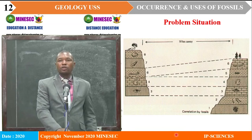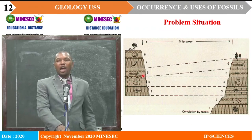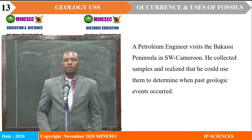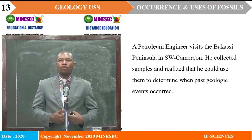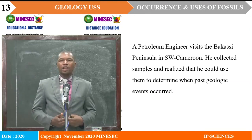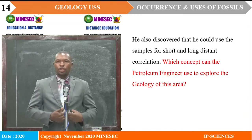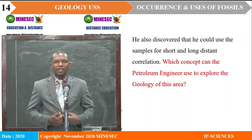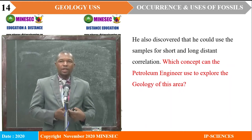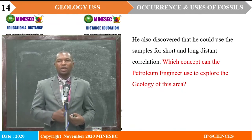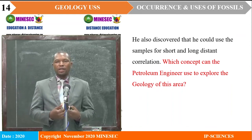In our problem situation, we shall take a look at these rock sequences — group one and group two — and you realize that all of them are layered, with each layer having specific fossils. This was a picture a geologist had in mind before going for field work. A petroleum engineer visits the Bakasi Peninsula in Southwest Cameroon. He collected samples and realized he could use them to determine when past geologic events occurred. He also discovered that he could use the samples for short and long distance correlation.